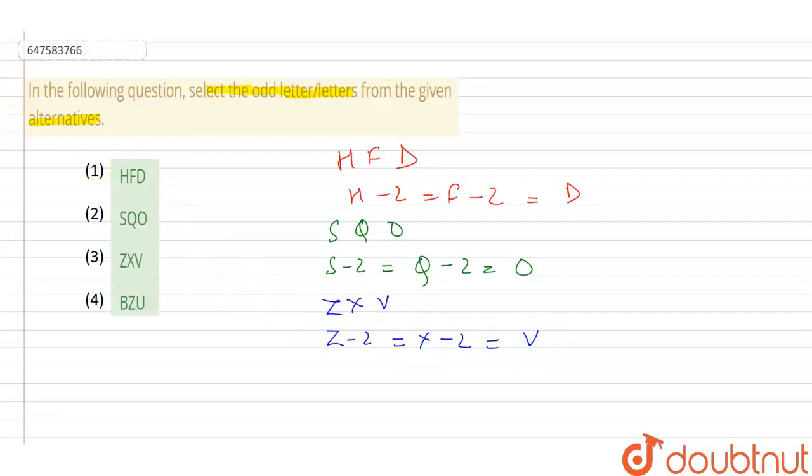Now guys, let's see our last word. B, Z, U. B, if we do minus 2, we will get Z. But Z, if we do minus 2, we will get X. We will get here X. B, we will not get here.